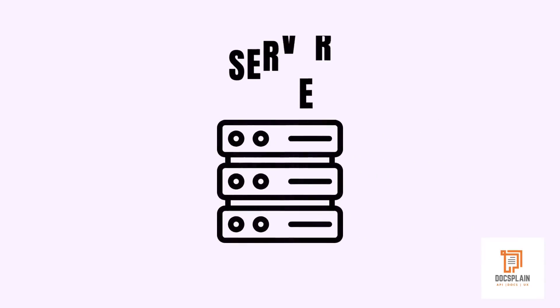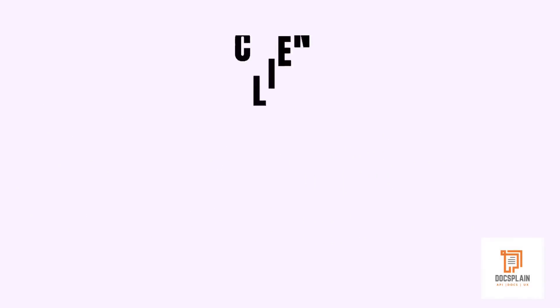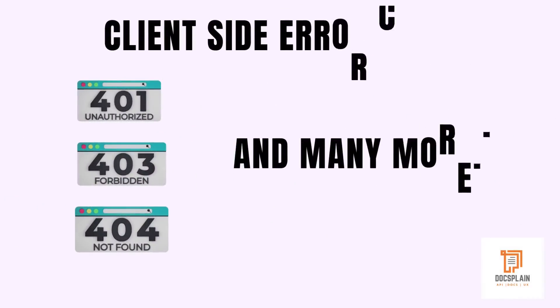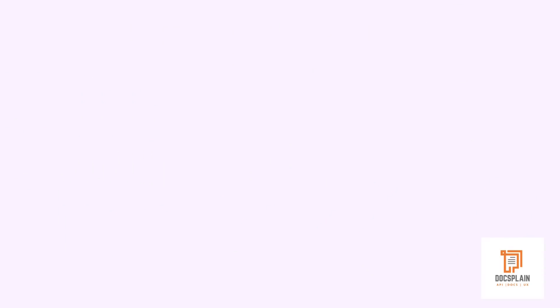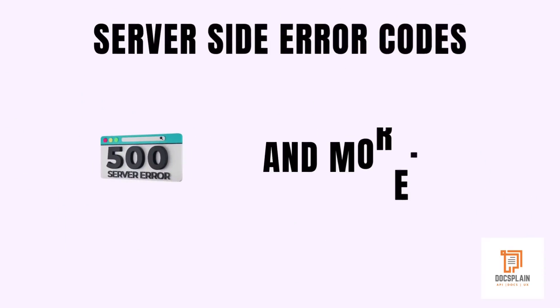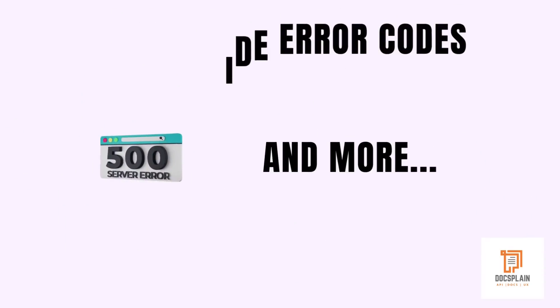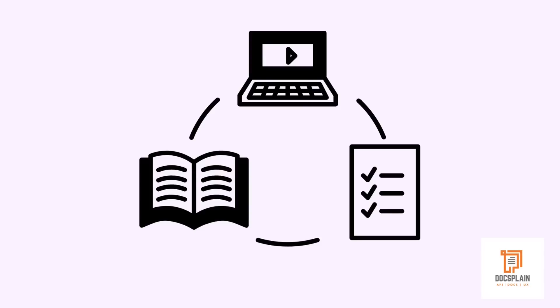These error codes would be generated either at the server or at the client side. Typically, a client-side HTTP error code starts with the 400 series, while the server-side has the 500 series. You'll be learning more about them in the future videos.